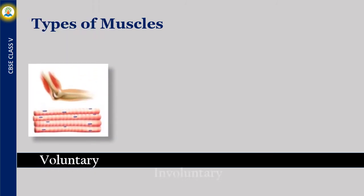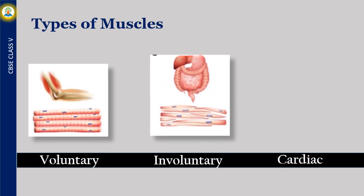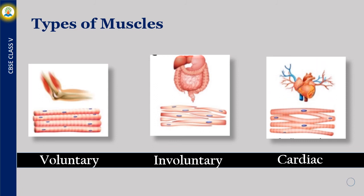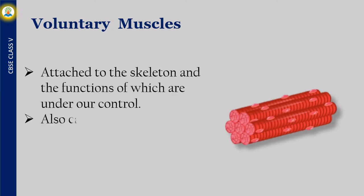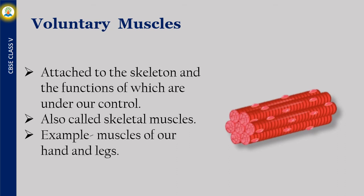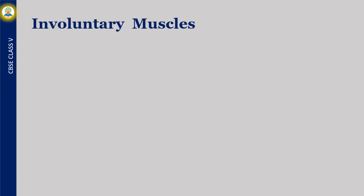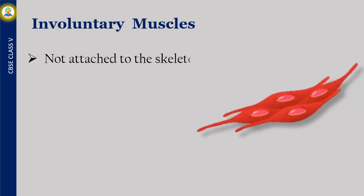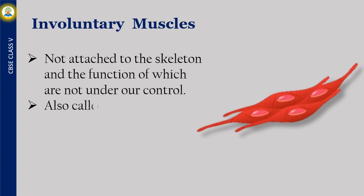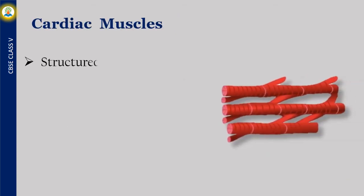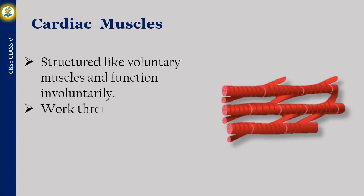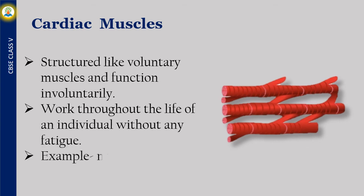There are three types of muscles in our body. Voluntary muscles are attached to the skeleton and their functions are under our control; also called skeletal muscles. Example: muscles of our hands and legs. Involuntary muscles are not attached to the skeleton and their functions are not under our control; also called smooth muscles. Example: muscles of the food pipe, stomach and intestine. Cardiac muscles are structured like voluntary muscles but function involuntarily, working throughout the life of an individual without any fatigue. Example: muscles of the heart.